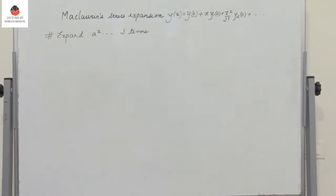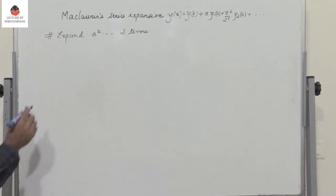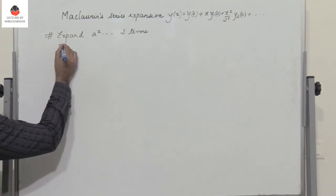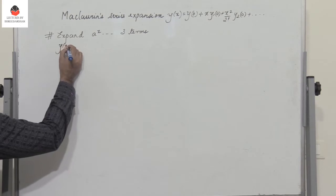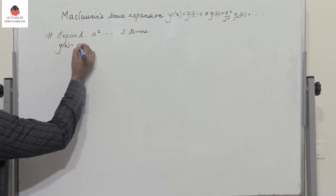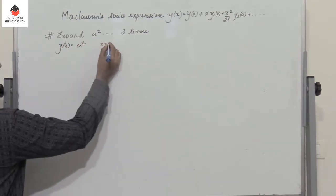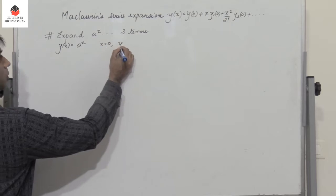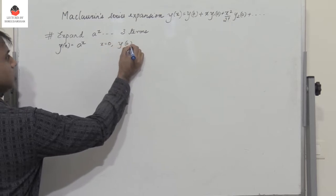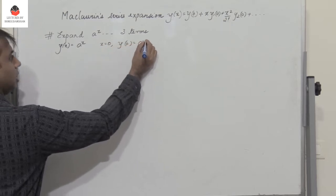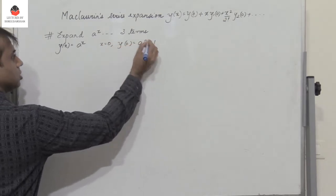Now let us expand a^x using Maclaurin series expansion up to three terms. So y(x) = a^x. Put x = 0. When you put x = 0, we have y(0) = a^0 = 1.